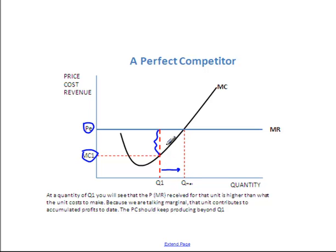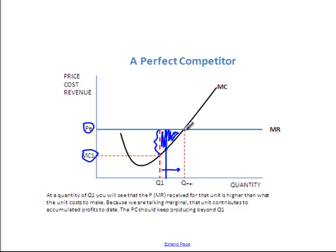Any extra units they can make in this zone — between Q1 and Q max — will also contribute to profit. For example, the next unit also has a cost below PE, and that unit contributes even more to profit. So a firm producing at Q1 should actually increase its output. It should keep producing units while those units continue to contribute to profit, and that stops at Q max.